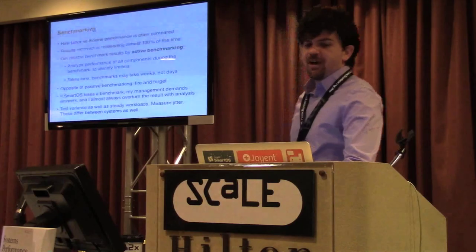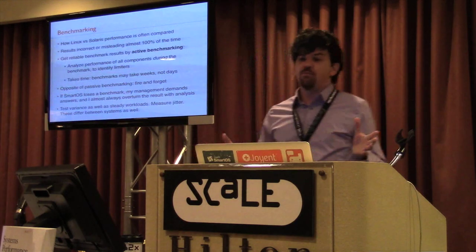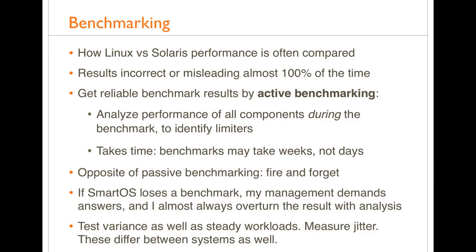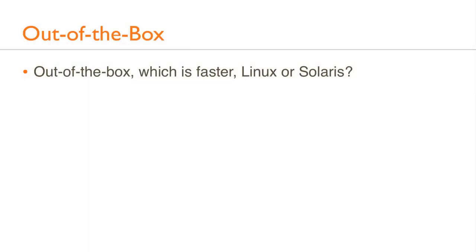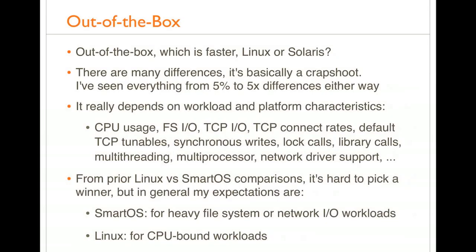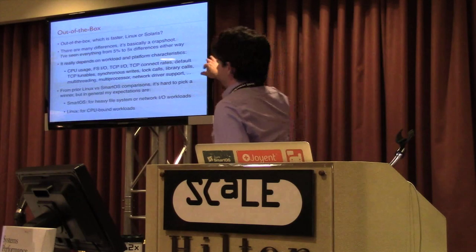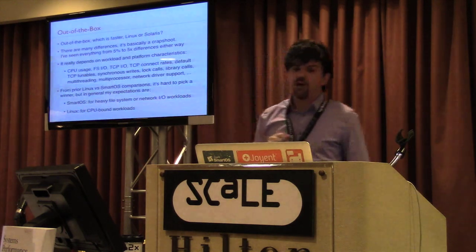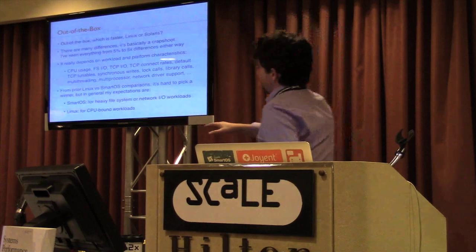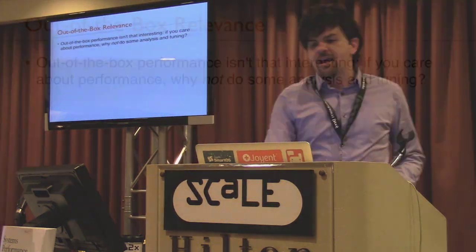What both can learn is benchmarking. Benchmarking is how these two systems are often evaluated, and it's incorrect or misleading basically 100% of the time. I recommend active benchmarking — use analysis tools to see why something went wrong, and that will explain it. Results: out of the box I've seen everything from 5% to 5x differences either way depending on workload and platform characteristics. From my prior comparisons, SmartOS is faster for heavy file system or network I/O, and Linux is faster for CPU-bound workloads because of application versioning and CPU affinity.